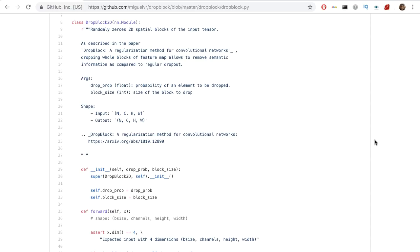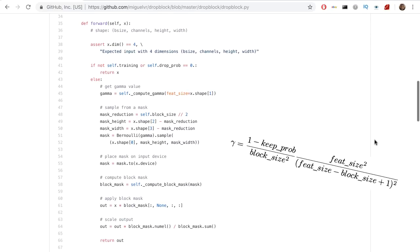The forward method takes an input. It computes gamma using that awesome formula, and it computes the mask. If we consider the 10x10 grid with a 5x5 block, we're going to sample from a Bernoulli distribution,